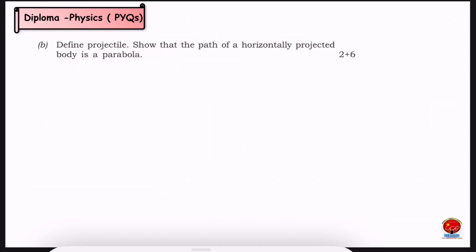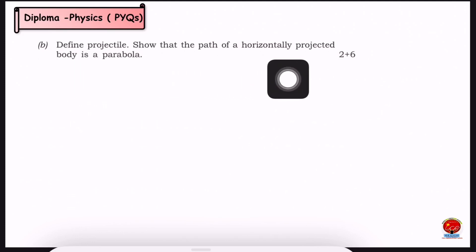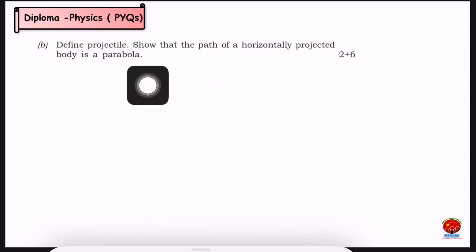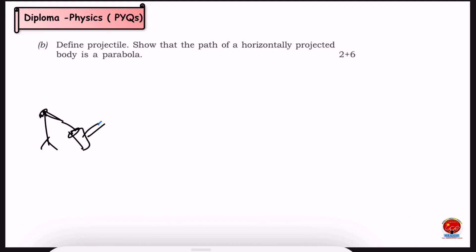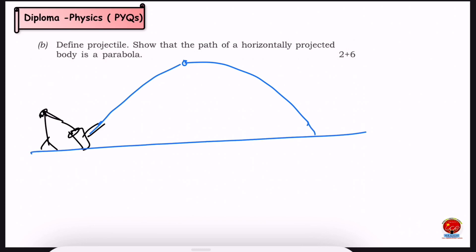Next question: Define the projectile. Show that the path of a horizontal projectile body is a parabola. For example, consider a cricket match — a batsman hits the ball with some force at an angle, and the ball travels through the air and reaches the ground, tracing a path in the shape of a parabola.